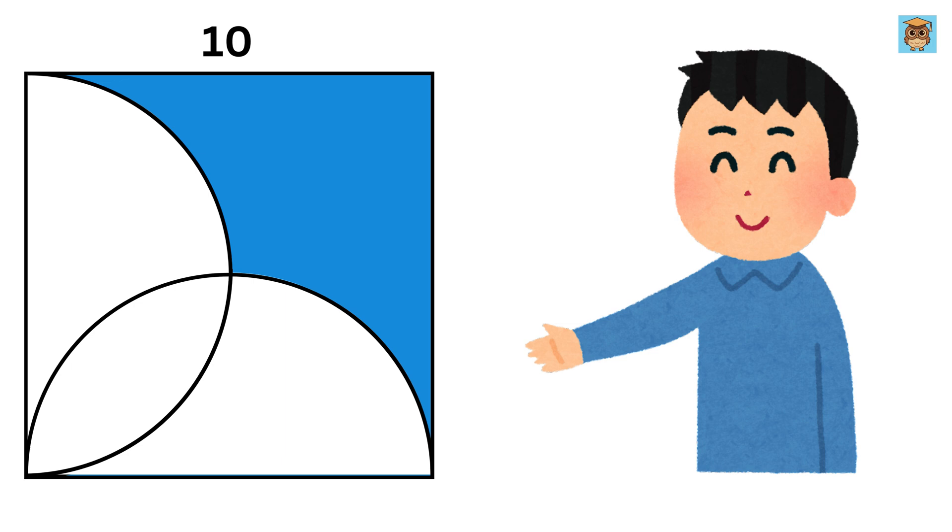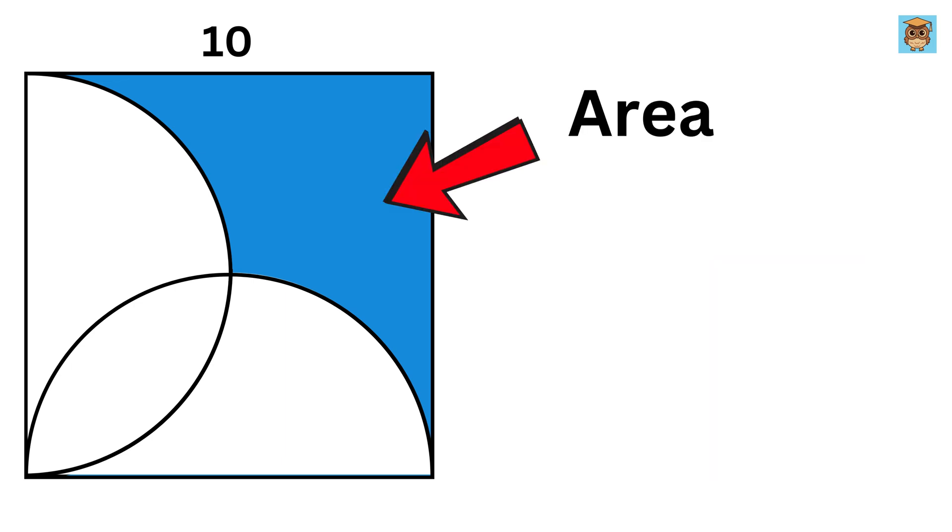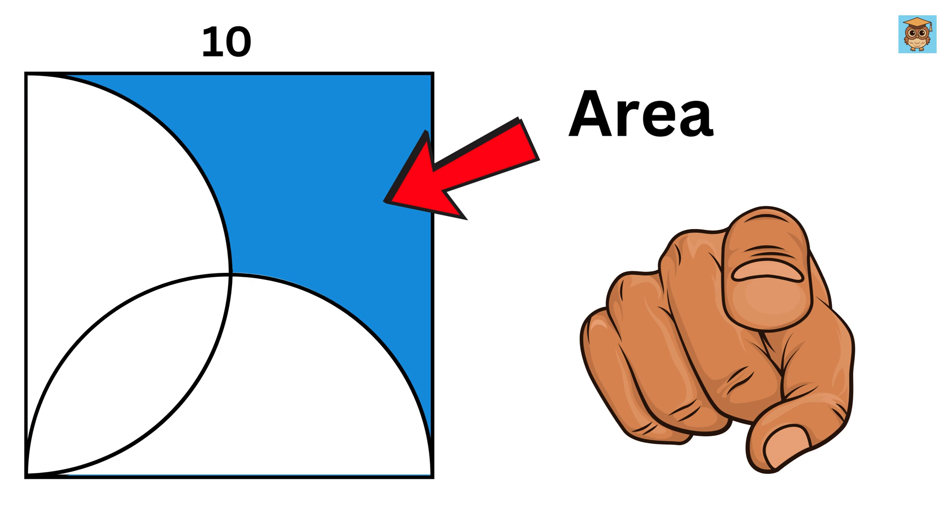We have a square and two semicircles inside it. Our goal is to find the area of the blue region. The trick here is to solve this problem without using integration. So, can you solve it?